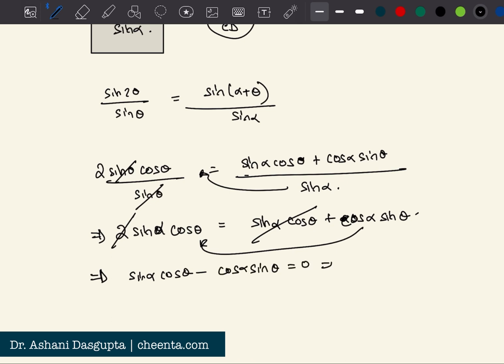Or sine of alpha minus theta is zero. Now in the comment section, from this equation can you tell me what is the value of alpha and theta? We are just one step away from the final solution, and with that can you tell me what is the value of angle A?